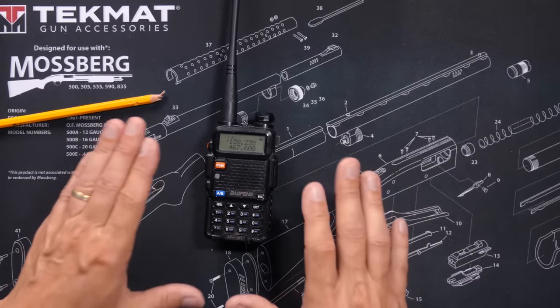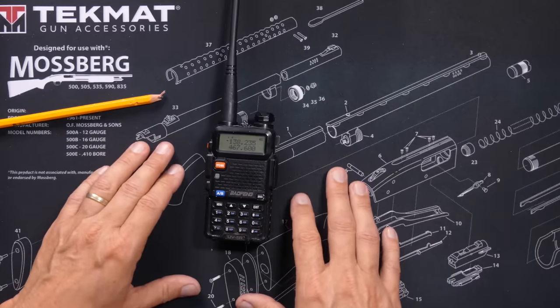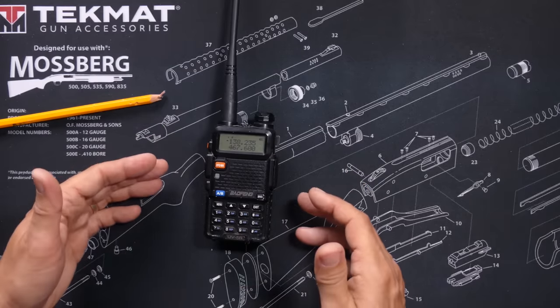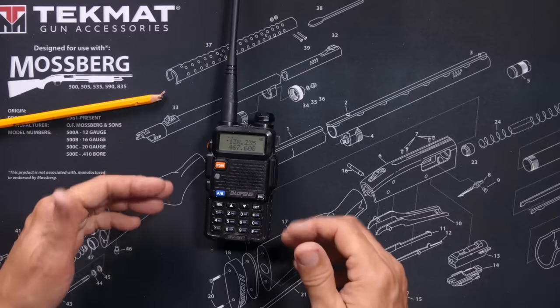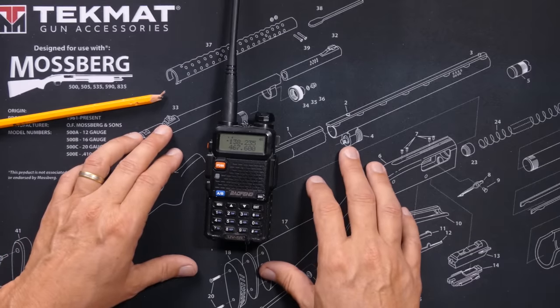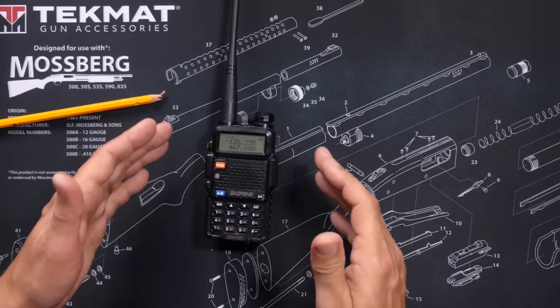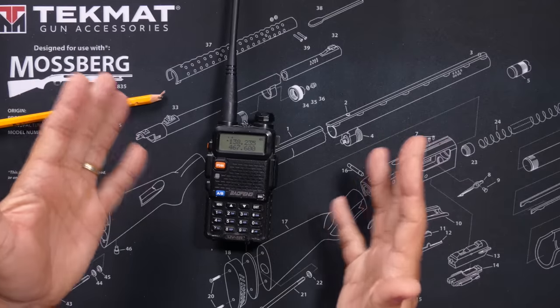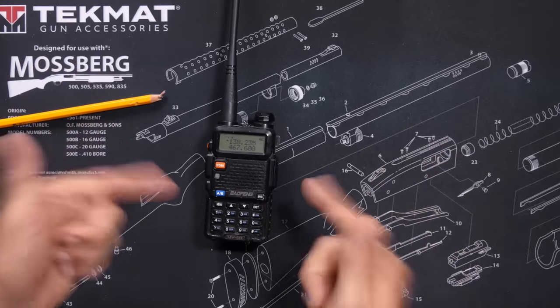Moving on. In the previous video I made about scanning using a UV-5R, I only discussed scanning through saved channels. And a lot of people wanted to know if you can scan through a range of frequencies instead of preset channels. And the answer to that is yes, and it is very simple to do so.